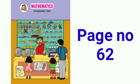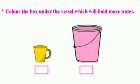So the pot will hold more water. Let us now open our maths textbook to page number 62 and see what is given. Let's read the question: color the box under the vessel which will hold more water. Here we are given the picture of a coffee mug and a bucket. Which vessel will hold more water? Very good! The bucket will hold more water, so we will color the box which is below the bucket.